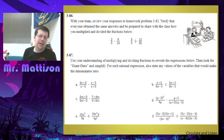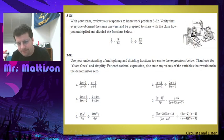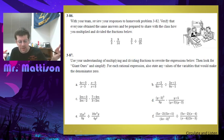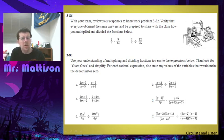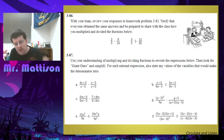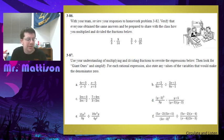So what we want to look at now is problem 87. This is going to combine what we did on that earlier problem — look for those giant ones and reduce — and the stuff we just did with multiplication and division. Go ahead and pause, work through all of 87, try and reduce as much as you can, and then also identify the values that x cannot be, or whatever that variable is.